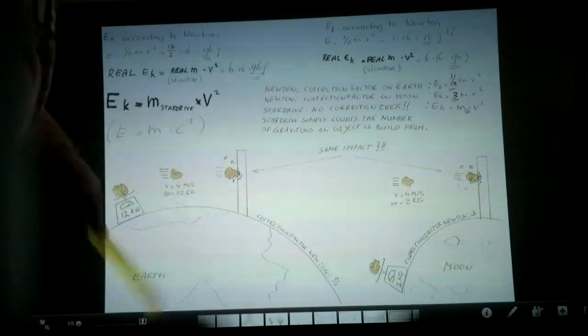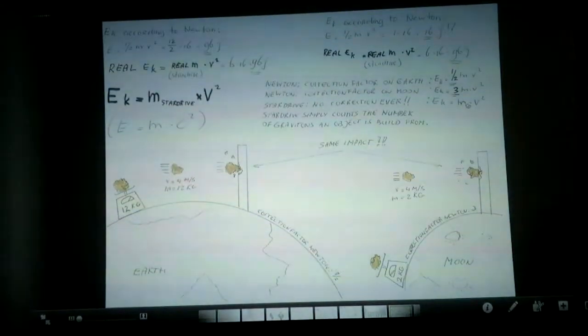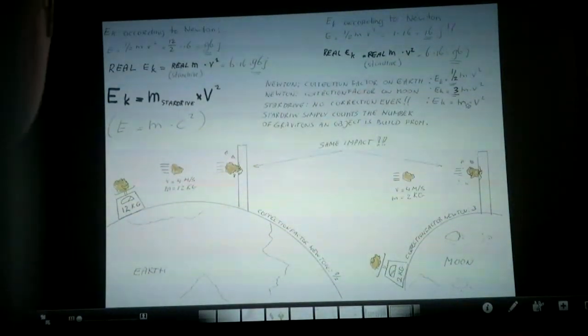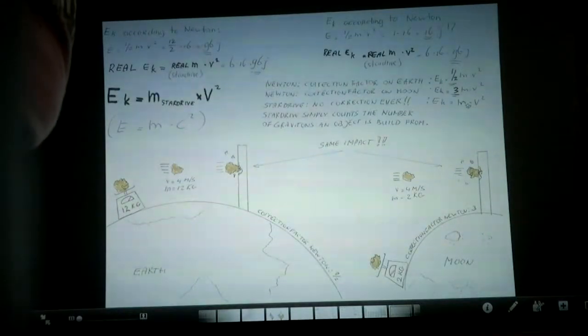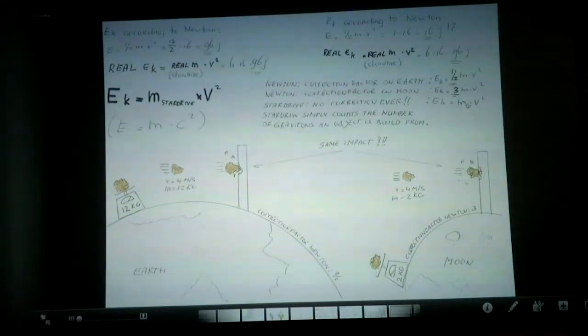And that's the same on the Moon, on Earth, on Pluto, every planet is the same mass. But Newton was misled by his scales. So he said, well, gosh, this object has far less impact than I expected.